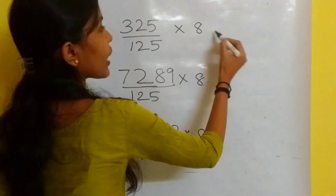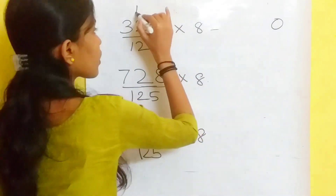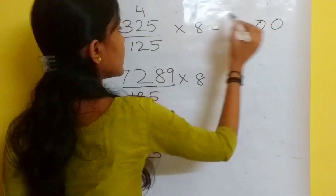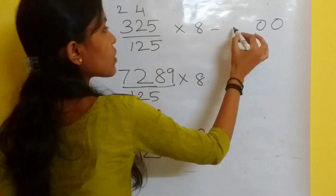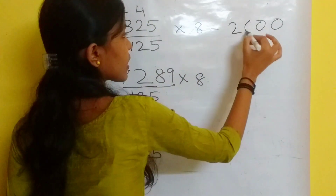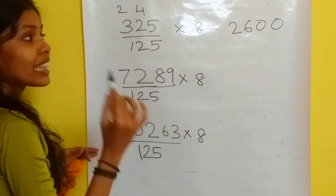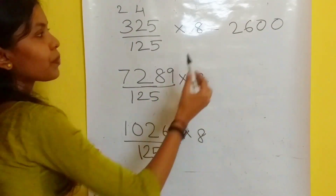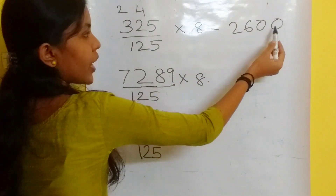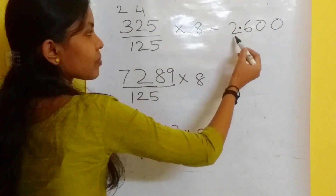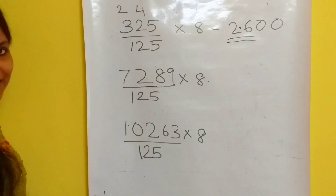Multiply 5 into 8 is 40, 2 into 8 is 16 plus 4 is 20, 3 into 8 is 24 plus 2 is 26. There should be three digits after the decimal point — 1, 2, 3 — so 2.600 is the answer.